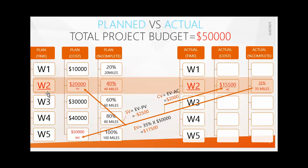In earned value analysis there are key terms to understand: PV (Planned Value), EV (Earned Value), and AC (Actual Cost). At this period of time — week two — you had planned to spend twenty thousand dollars for forty miles of work. That value, twenty thousand dollars, is what we call Planned Value.